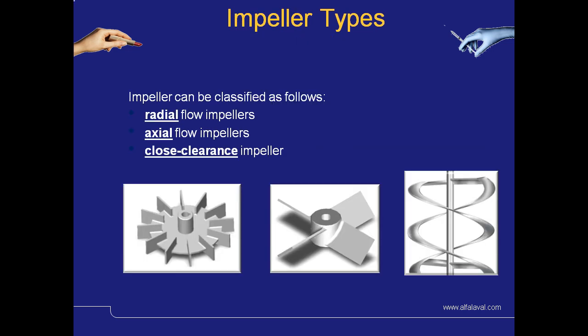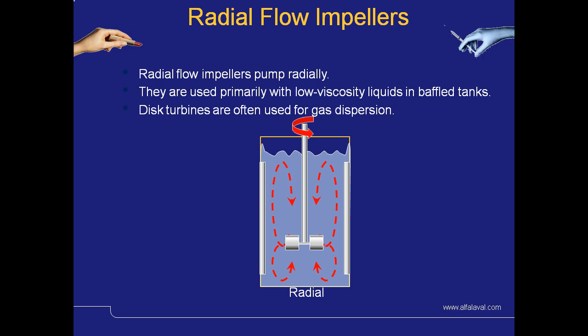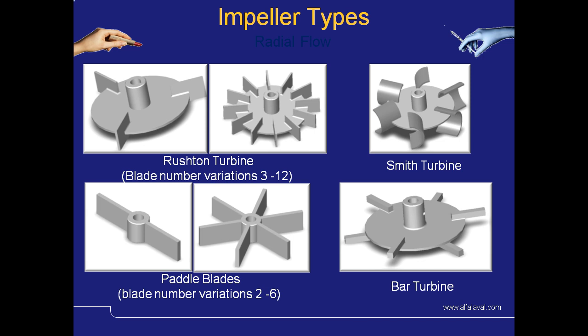When we begin to look at the impeller types for agitators, these can be broken down into three main types: number one, the radial flow impeller; number two, the axial flow impeller; and number three, the close clearance impeller. This small sketch shows the flow pumping pattern for radial impellers. As their name indicates, these mix or agitate in a radial pattern. These are quite often used on low viscosity liquids in baffled tanks, and sometimes a disc turbine can be used for gas dispersion. A number of different types of radial impellers are available — the amount of blades, their position and angle give different mixing effects and patterns within the fluid.